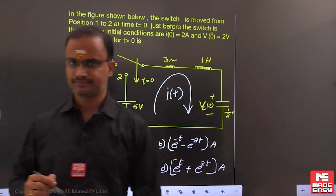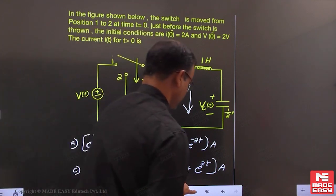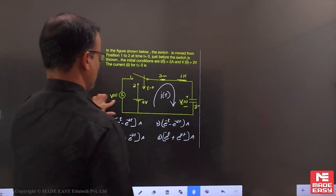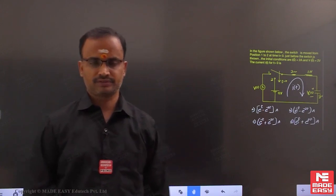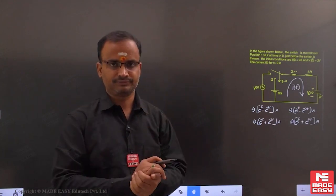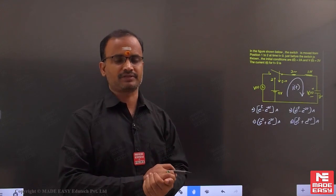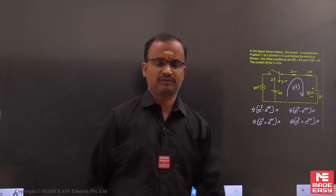First note on this example: there is no need to develop an equivalent circuit at t equals 0 minus. In the question itself, the initial current for the inductor is given, and the initial voltage for the capacitor is given. With the help of these initial values, we can develop the equivalent circuit for t greater than 0.